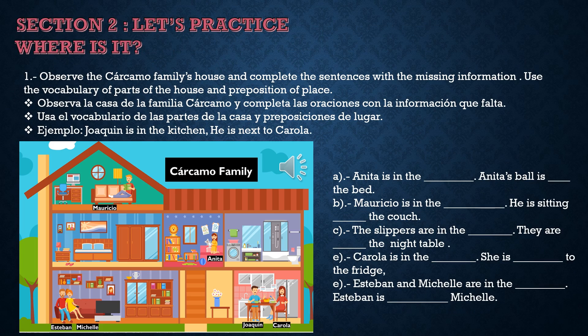Section 2. Let's practice. Where is it? Activity number 1. Observe the Cárcamos family's house and complete the sentence with the missing information. Use the vocabulary of the parts of the house and prepositions of place. Observa la casa de la familia Cárcamo y completa las oraciones con la información que falta. Use el vocabulario de las partes de la casa y preposiciones de lugar.